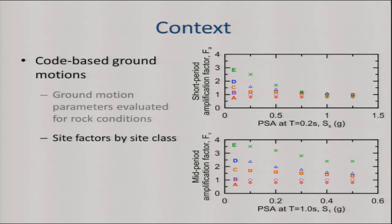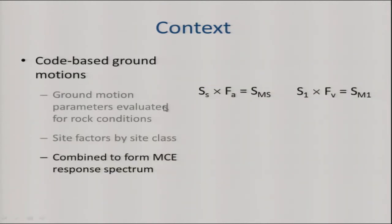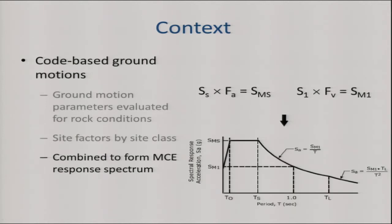Those parameters are then modified through site factors. You come up with a VS30 for your site, and on that basis divide the world into five categories, A through E — A being rock-like and E being the softest soil. You assign a factor: F_A for short periods and F_V for long periods. S_S multiplied by F_A forms the short-period spectral acceleration for the site condition; same for mid-periods. These are combined with rules for constructing the spectral shape, and you end up with a spectrum defined on the basis of these two parameters.